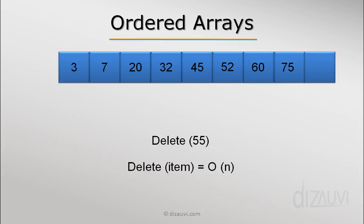So the time for deleting is order of n because in the worst case, we may need to copy all the elements of the array over, which is the case when the first item was deleted. So the worst case time complexity for the delete operation in an ordered array is of the order of n.